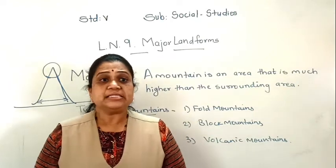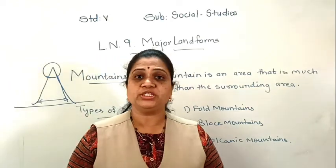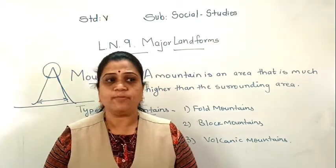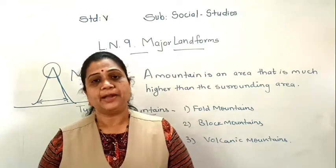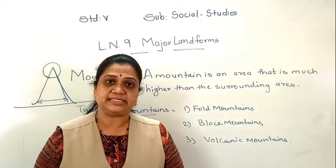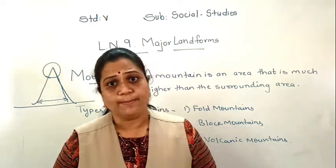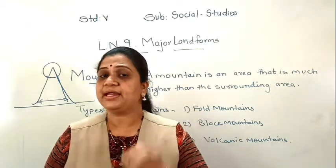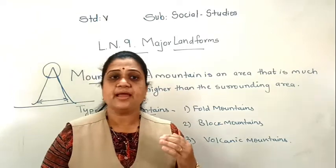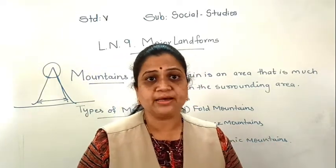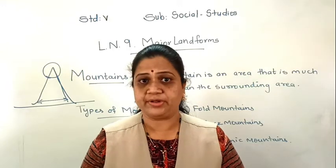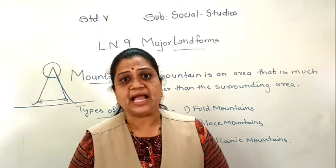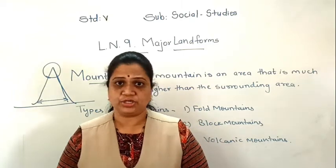Also, the rivers which originate from the Himalayas carry sand and silt with them, which makes the land fertile and good agricultural activities are conducted on the plain surface. The Himalayan rivers are perennial rivers, meaning they have water throughout the year — they are not rain-fed rivers. So these rivers help in irrigation and agriculture activities.